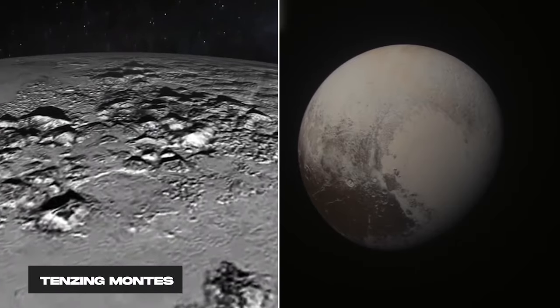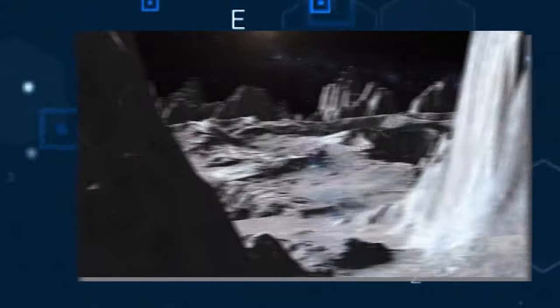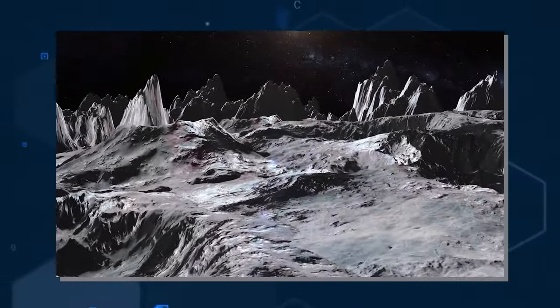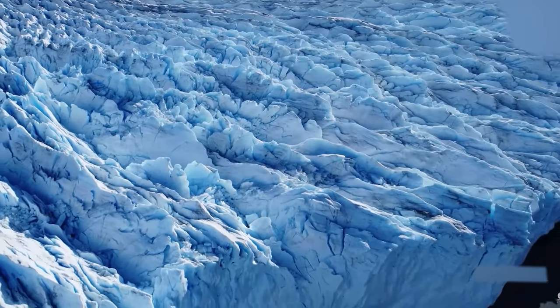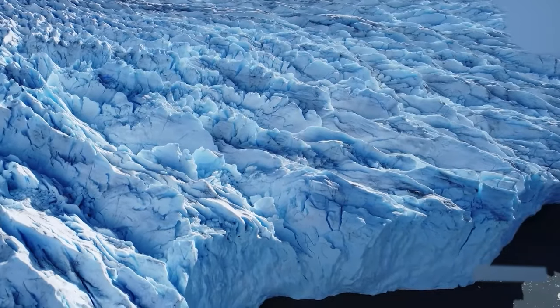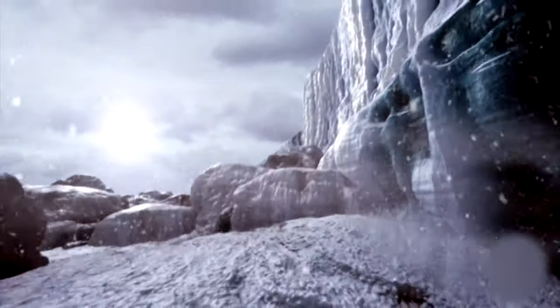Meanwhile, Tenzing Montes, located in the southern part of the heart-shaped region, boasts some peaks soaring to over 6 kilometers above Pluto's average surface elevation. Remarkably, these rock formations are primarily composed of water ice, solid as rock under Pluto's frigid temperatures.